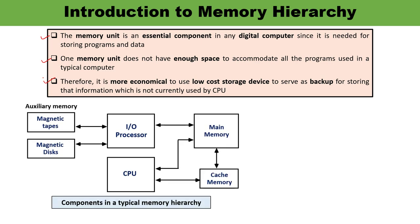In this diagram you can observe the components of a typical memory hierarchy. There are various components: auxiliary memory, I/O processor, CPU, main memory, and cache memory. The memory unit which communicates directly with the CPU is known as main memory, and the device which provides backup storage is known as auxiliary memory.